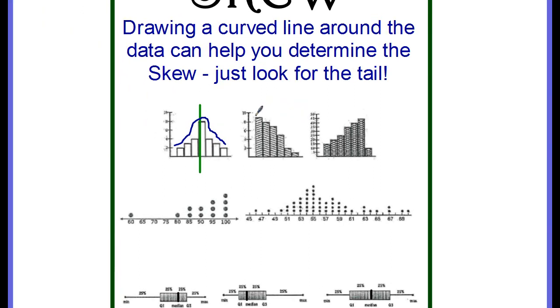But if you look at this next graph, you just kind of draw an outline. You can tell that the majority of the data appears to be on the left side. So this would be skewed right. This would be a right skew. And this one we said was symmetric.